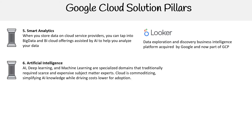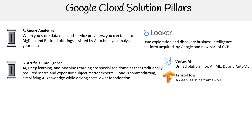Then you have artificial intelligence. AI, deep learning, and ML are specialized domains that traditionally required scarce and expensive subject matter experts. Cloud is commoditizing and simplifying AI knowledge while driving costs lower for adoption. Google has a lot of tools here, but the primary one is Vertex AI — a unified platform for AI, ML, deep learning, and AutoML. They have their own deep learning framework which is really easy to use, and it's a personal favorite.